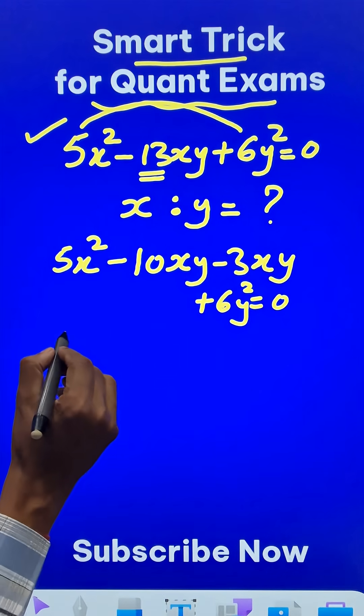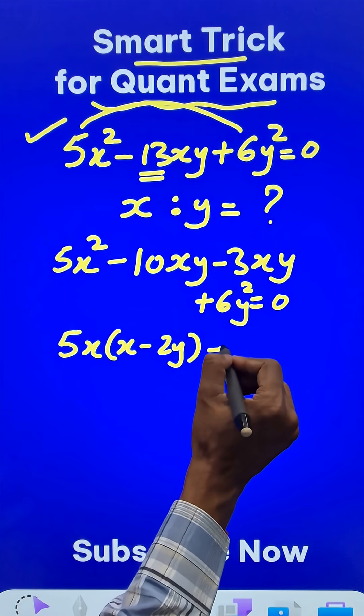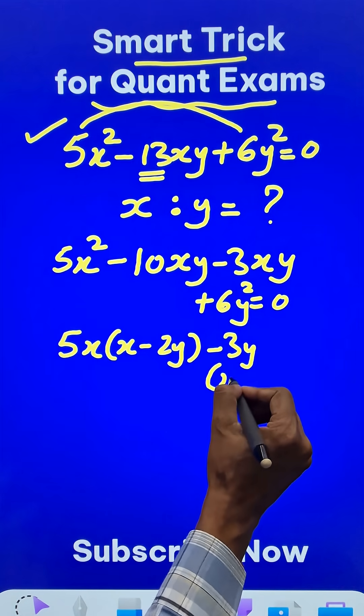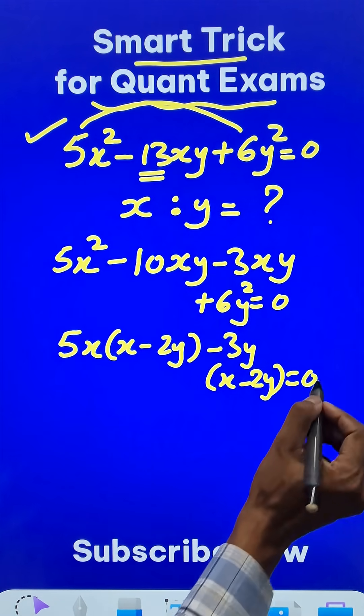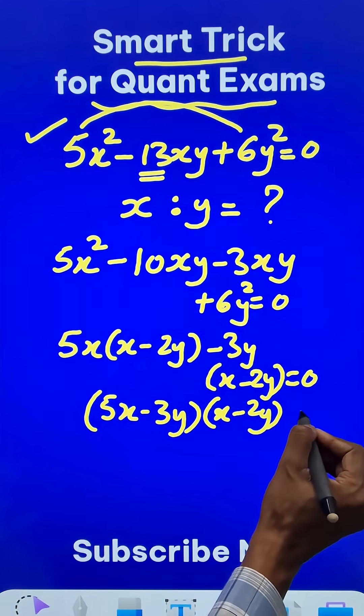Now when you take the common factor out you will get 5x(x - 2y) and similarly minus 3y(x - 2y) in the bracket again equal to 0. And so the two factors are (5x - 3y) and (x - 2y) which is equal to 0.